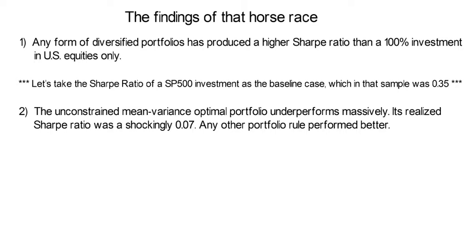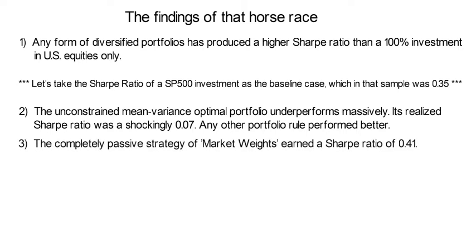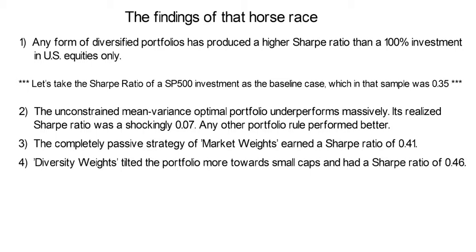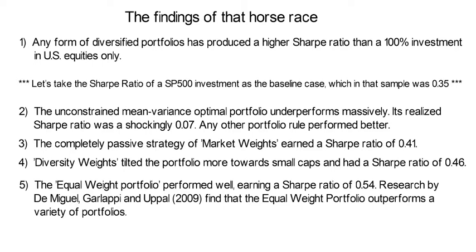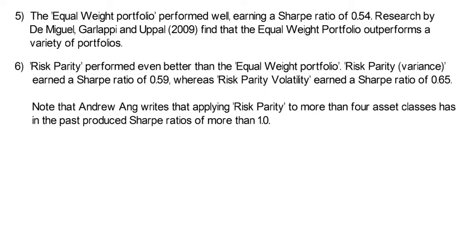Maybe even worse: any other portfolio rule performed better. The third finding was that the completely passive strategy of market weights earned a Sharpe Ratio of 0.41. Fourth, diversity weights tilted the portfolio more towards small-cap firms and earned a Sharpe Ratio of 0.46. The fifth takeaway was that the equal weight portfolio performed well, earning a Sharpe Ratio of 0.54. Research by De Miguel, Garlappi and Uppal 2009 finds that the equal weight portfolio outperforms a variety of portfolios. The sixth takeaway was that risk parity performed even better: risk parity in terms of variance earned a Sharpe Ratio of 0.59.